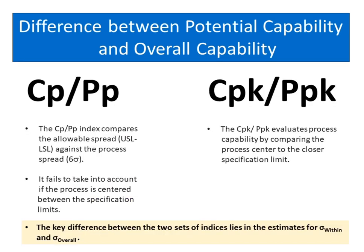The CP-PP index compares the allowable spread (USL minus LSL) against the process spread, Six Sigma. It fails to take into account if the process is centered between the specification limits. The CPK-PPK evaluates process capability by comparing the process center to the closer specification limit.